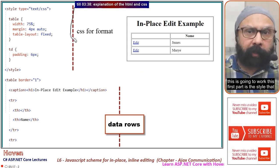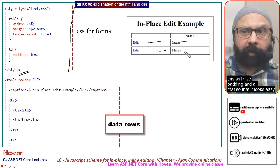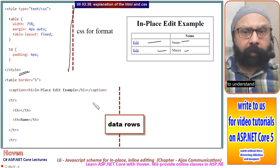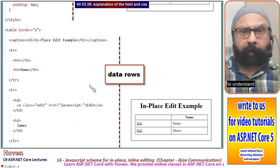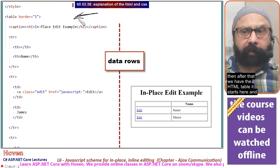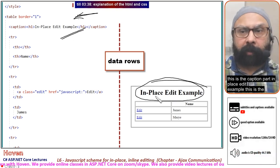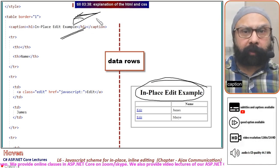This first part is the style I have added for formatting and padding so it looks easy to understand. Then we have the HTML table. It starts here with the caption: In-Place Edit Example.